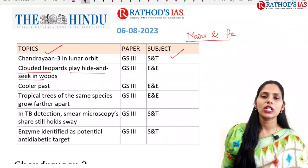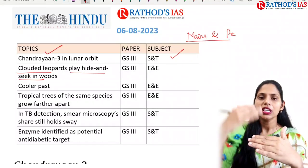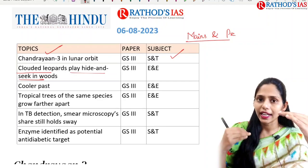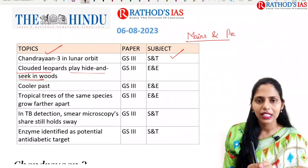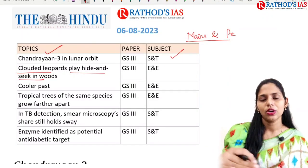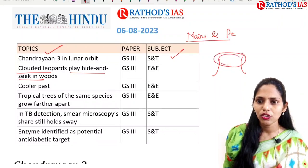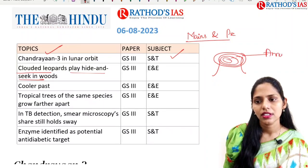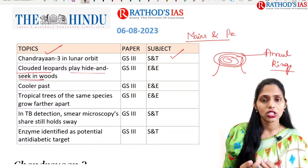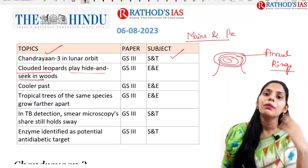The next topic is 'Cooler Past.' A recent study says that comparing the medieval period with the 21st century, there is a lot of temperature difference — meaning there is increasing global temperature. This study was done using tree rings, also called annual rings. Whenever a tree trunk is cut down, you can see rings. These annual rings were studied by researchers and scientists, who confirmed that yes, there is a lot of temperature increase when comparing with the medieval period till now.